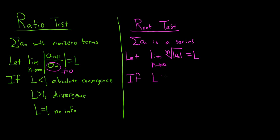So if L is less than 1, just like the ratio test we have absolute convergence. If L is bigger than 1, we have divergence. And if L is equal to 1, we have no information. Okay, now that we've discussed both tests let's do a simple example of each.